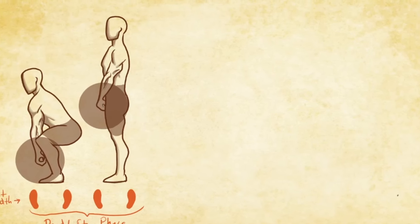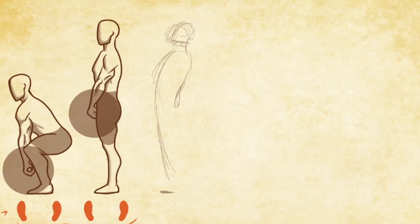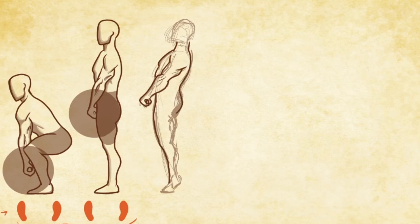This being the explosive triple extension of the hips, knees, and ankles. The purpose of this phase of the movement is to powerfully launch the weight vertically, often called the jump phase of the lift, for its resemblance to a standing vertical jump.